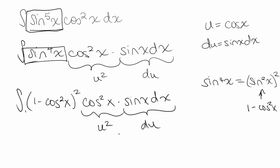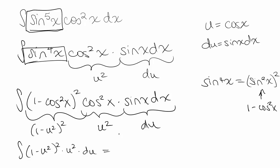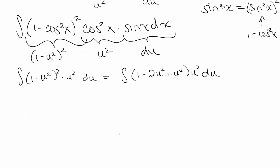We're going to write sine to the fourth of x as (sine squared of x) squared. From the Pythagorean identity, sine squared is 1 minus cosine squared. Putting that all together, we get the integral of (1 minus cosine squared) squared times cosine squared of x times sine of x dx. We save sine of x dx as du, cosine squared becomes u squared, and (1 minus cosine squared of x) squared becomes (1 minus u squared) squared. So our new integral is (1 minus u squared) squared times u squared du. Distributing gives us u squared minus 2u to the fourth plus u to the sixth du.